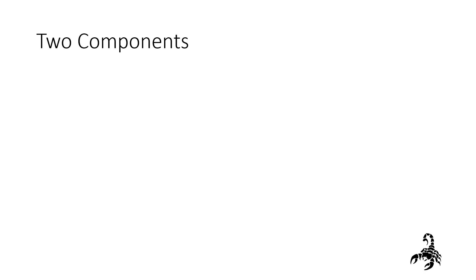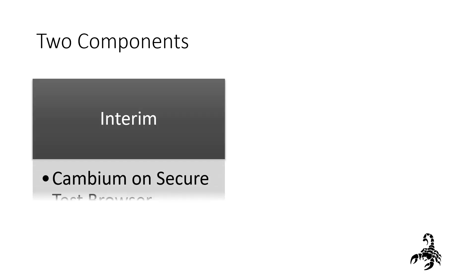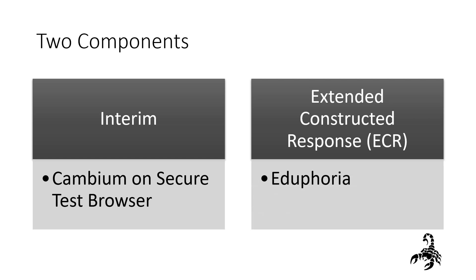There are two components of the English exams. The first component is the interim exam. It is completed on the secure test browser and uses Cambium. The second component is the Extended Constructed Response, or ECR. It is completed in Eduphoria.